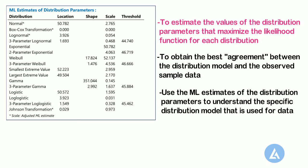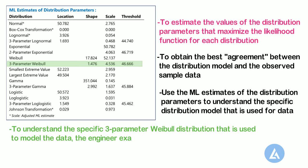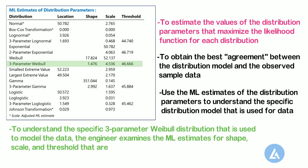In our example, based on the Anderson-Darling and LRT p-values, the three-parameter Weibull distribution provides the best fit for the process data. To understand this specific three-parameter Weibull distribution used to model the data, the engineer examines the ML estimates for shape, scale, and threshold that are calculated for the distribution.